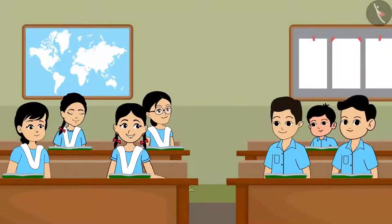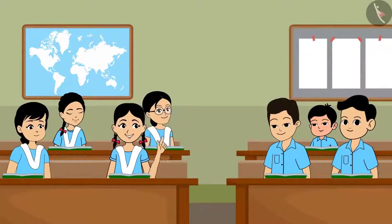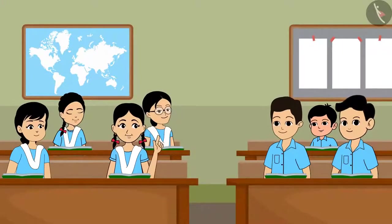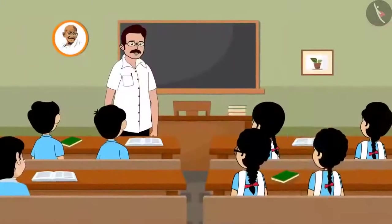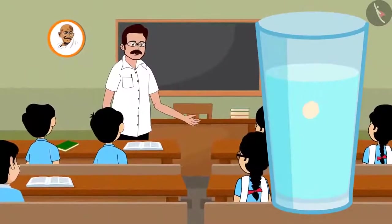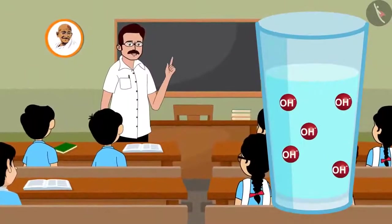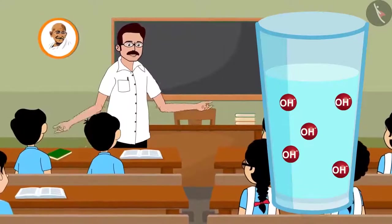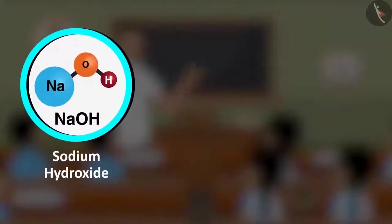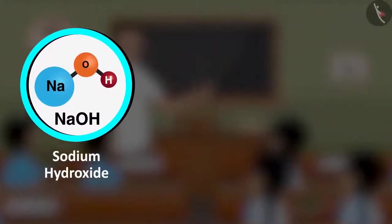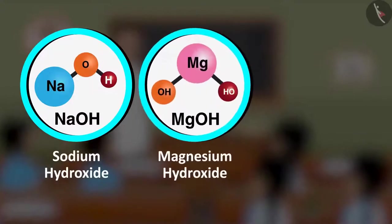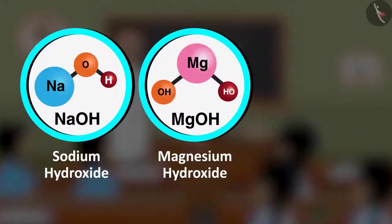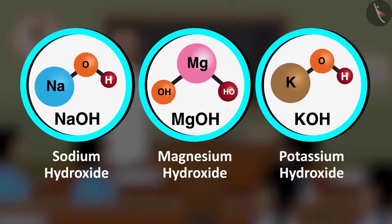Sir, do bases have more hydroxide ions in them? A base is any compound that yields hydroxide ions (OH⁻) when dissolved in water. Examples include sodium hydroxide (NaOH), magnesium hydroxide (Mg(OH)₂), and potassium hydroxide (KOH).